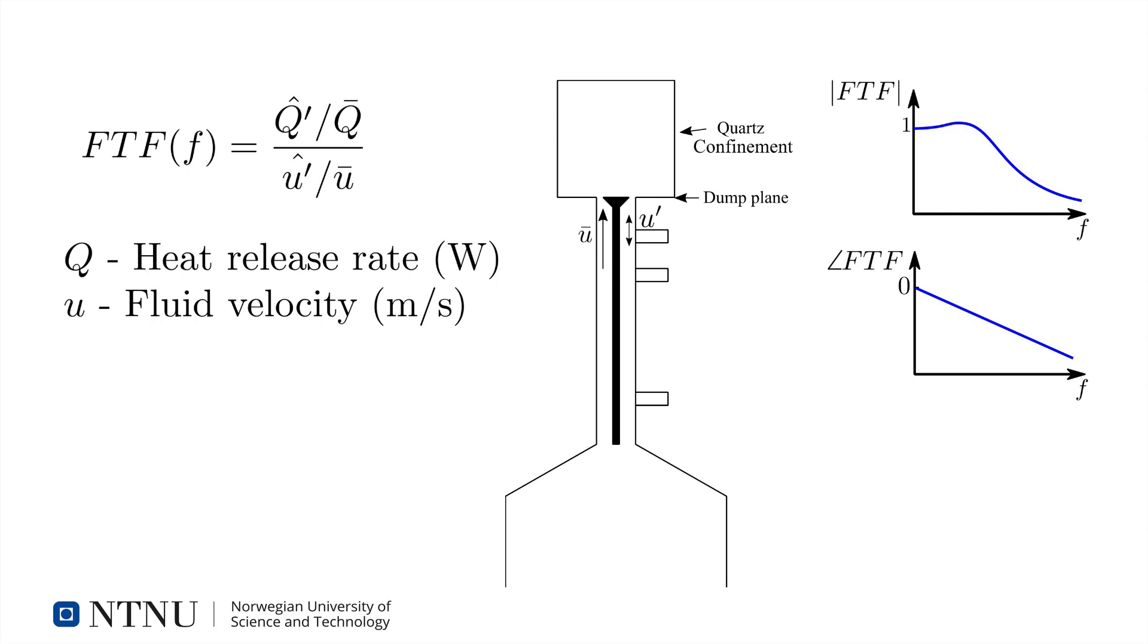Q is the heat release rate, which has units of watts. U is the fluid velocity at a reference position, typically chosen to be at the flame anchoring point, or, for lifted flames, at a geometry transition in the combustor used to stabilize a flame.